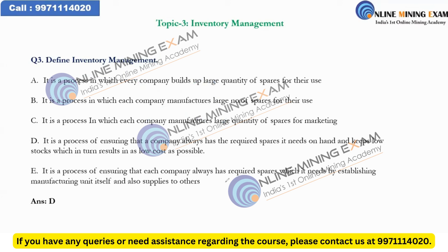Now comparing D and E: option E says the company establishes its own manufacturing unit. If it's a large plant, maybe it can have its own manufacturing unit — but a small business doing general trading cannot manufacture every part itself. So the answer is D, and that question was easy. I'm very happy that most of you answered it correctly.